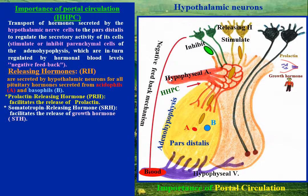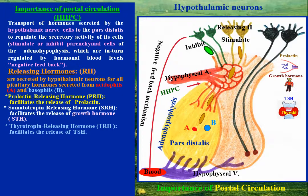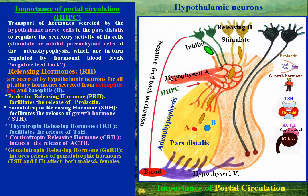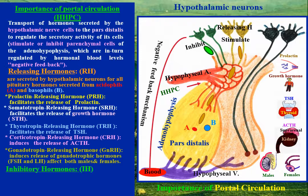Thyrotropin-releasing hormone (TRH) facilitates the release of thyroid-stimulating hormone (TSH). Corticotropin-releasing hormone (CRH) induces the release of adrenocorticotrophic hormone (ACTH). Gonadotropin-releasing hormone (GRH) induces the release of gonadotrophic hormones — follicle-stimulating and luteinizing hormones — affecting both males and females. Inhibitory hormones (IH) for pituitary hormones are secreted from acidophils only.